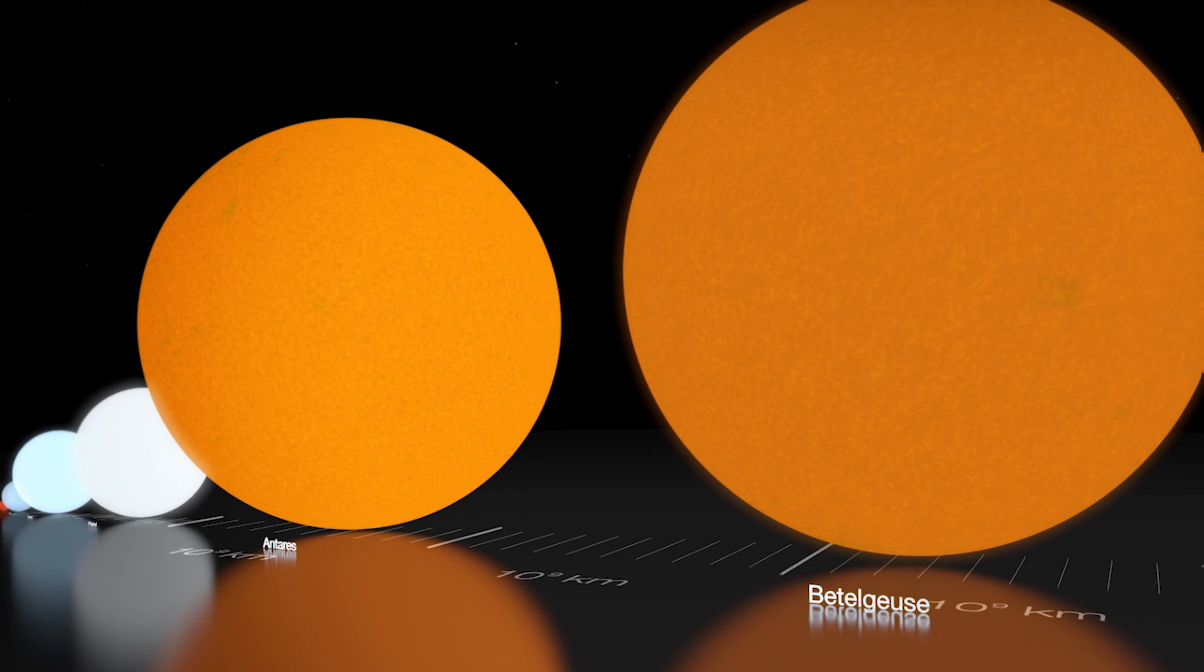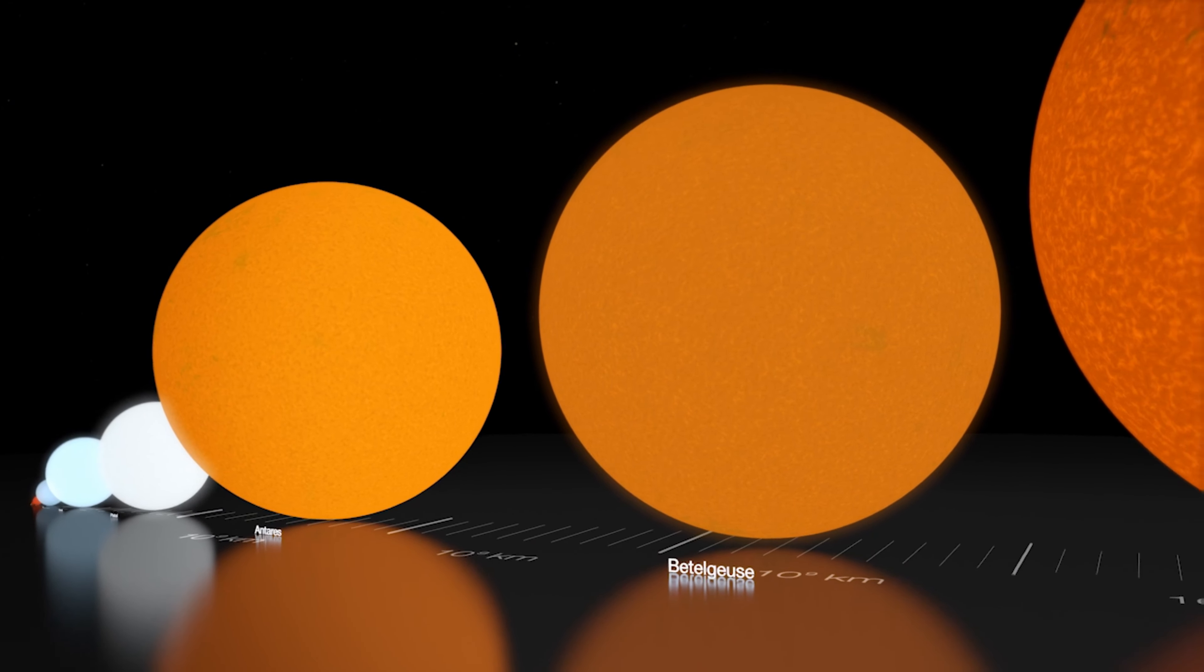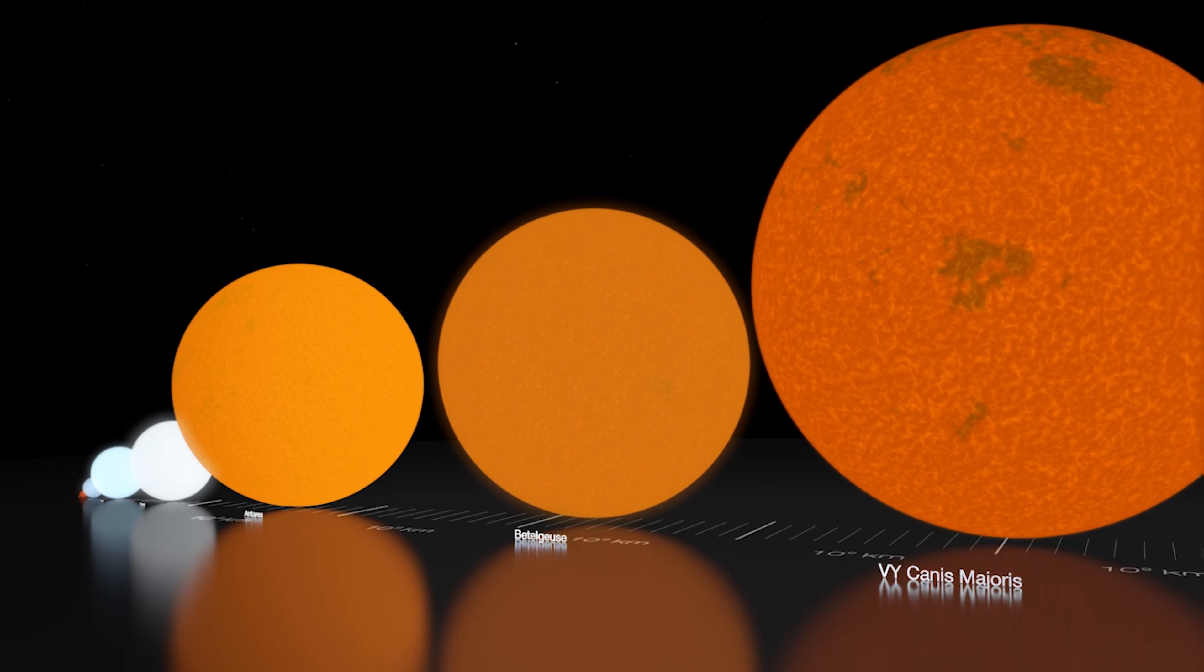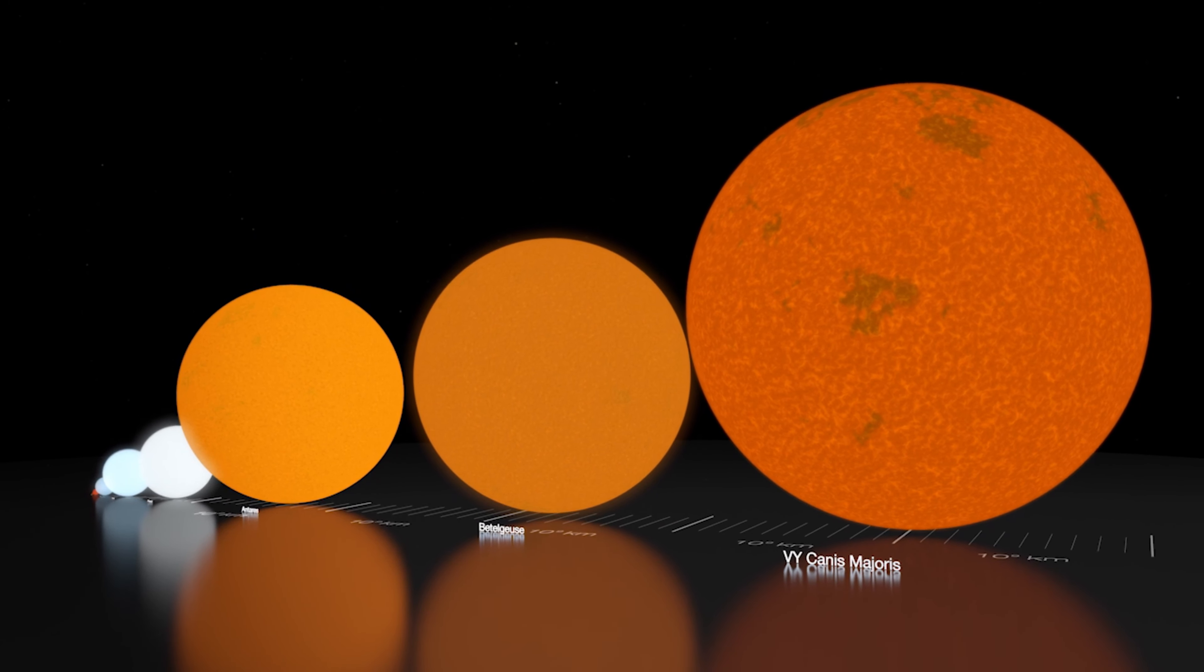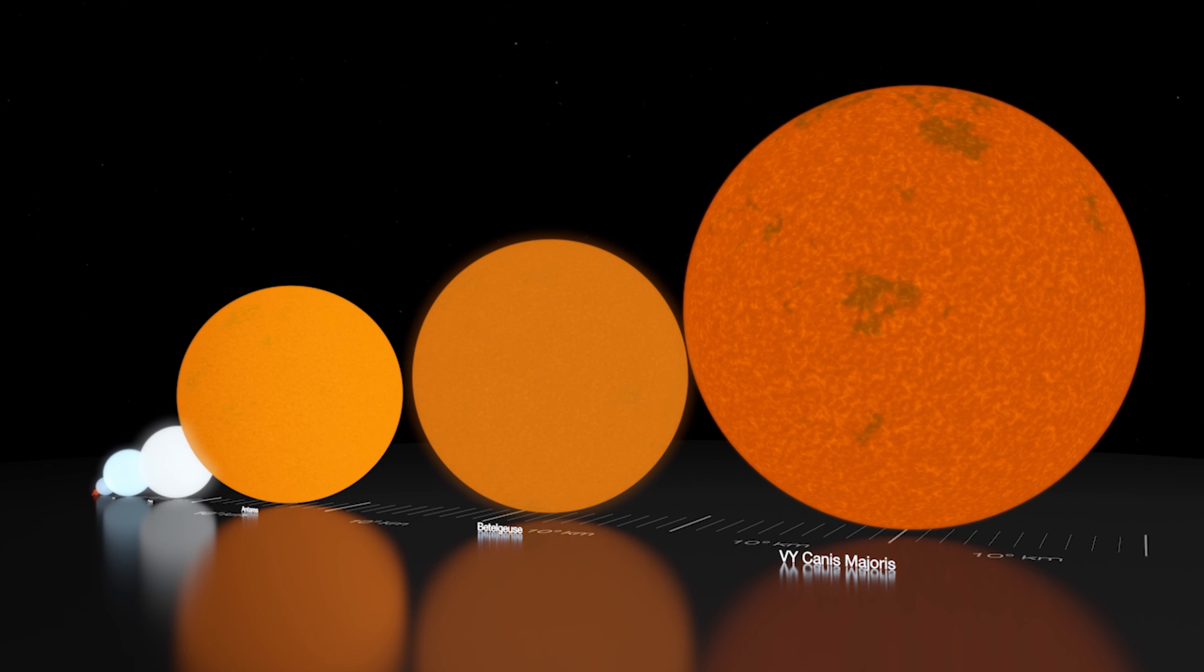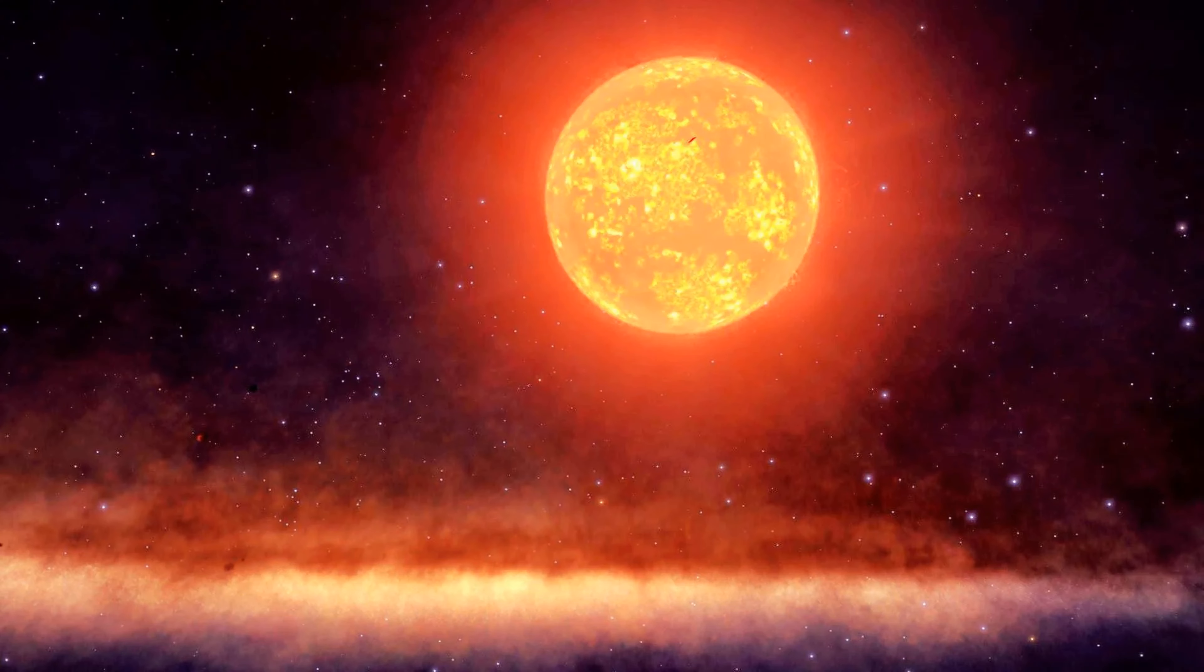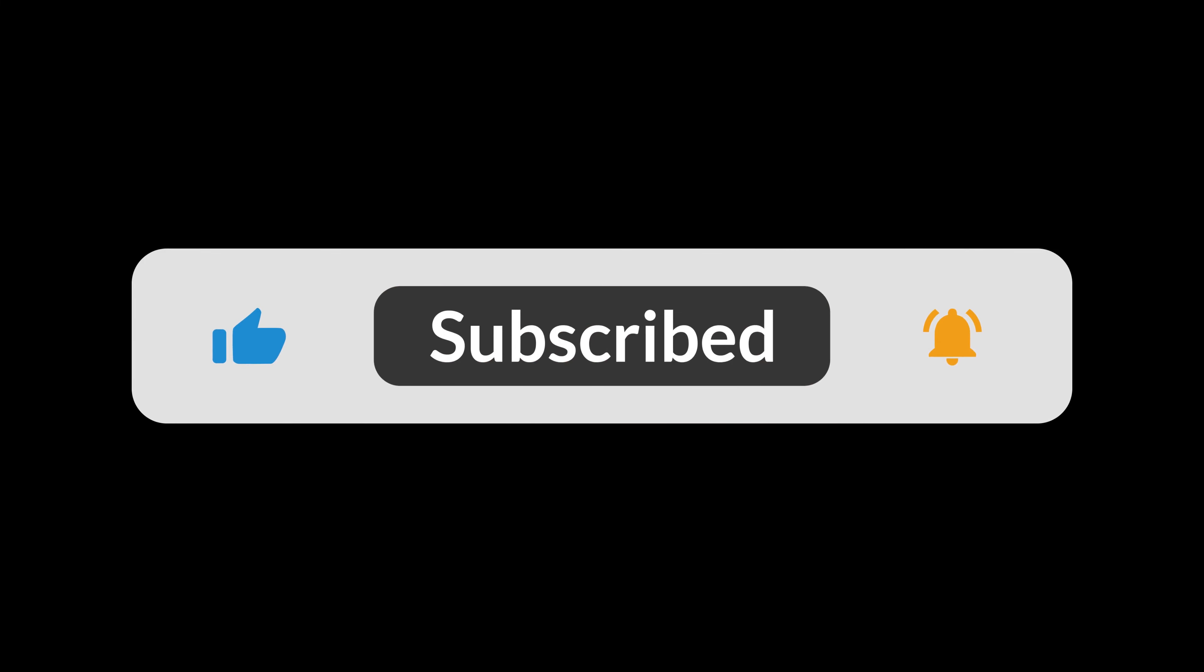The size of VY Canis Majoris is truly immense, about 1,420 times larger and 300,000 times brighter than our Sun. Our Sun is 1.391 million kilometers in diameter; VY Canis Majoris is estimated at 1.976 billion kilometers, which is 1,420 times as big. If VY Canis Majoris was placed in the center of our solar system, it would almost reach the orbit of Saturn.